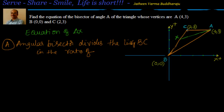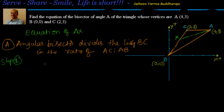The angular bisector from A divides BC in the ratio of the sides making that angle. Angle A is made by CA and AB, so it divides BC in the ratio AC : AB. So now I have to find out the length of AC and the length of AB. Once I find those, I can use the section formula to find the coordinates of X, and then use two-point form to get the equation. Our next step is to find the ratio AC : AB.